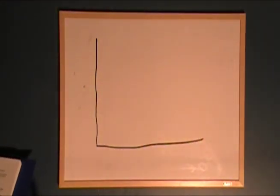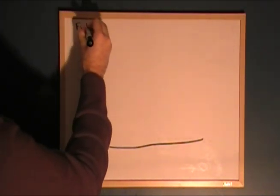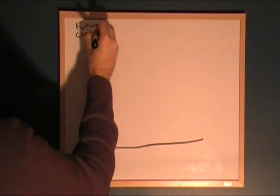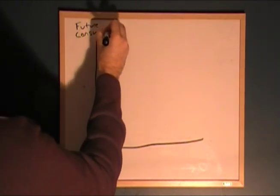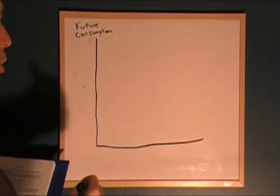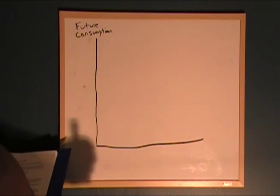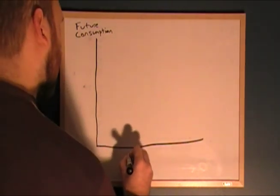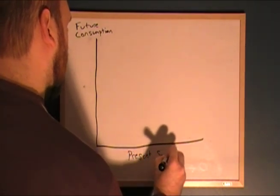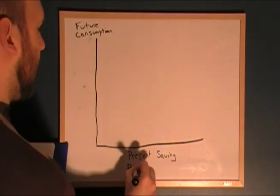On the y-axis we're going to be looking at future consumption. On the x-axis we're going to be looking at two sides of the same coin: present saving and present consumption.